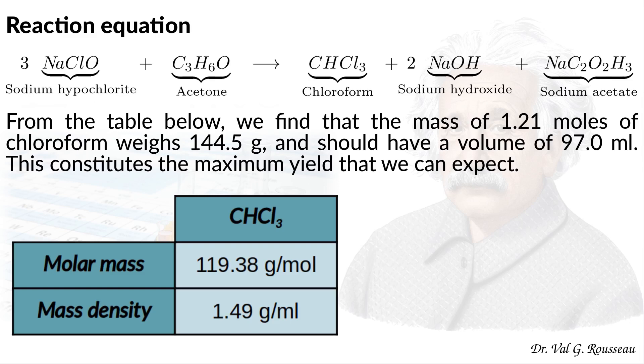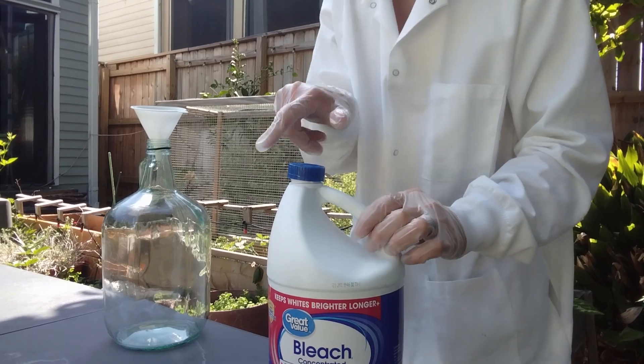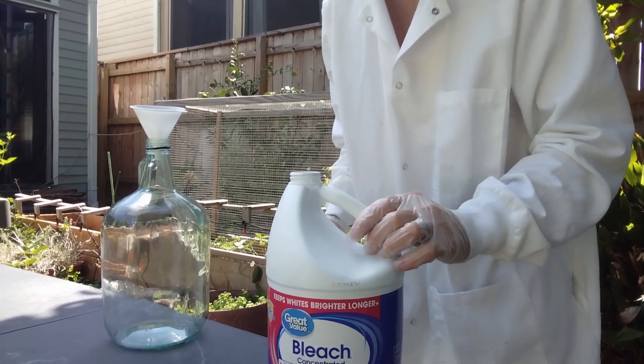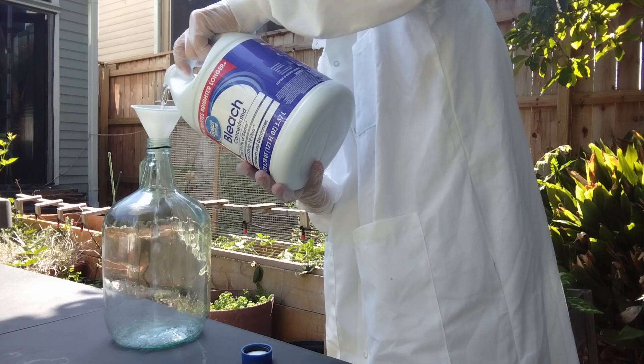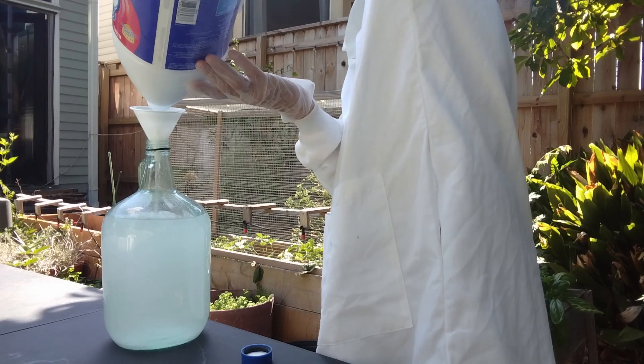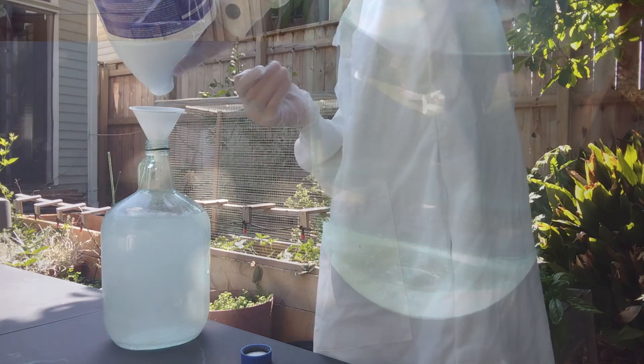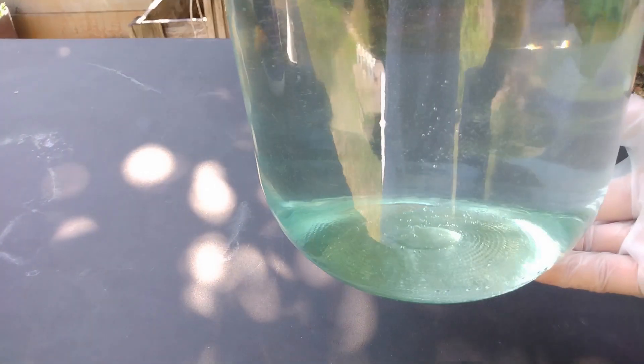We will actually obtain less because for convenience, we added all the acetone at once, which is generating a lot of heat that is destructive for the sodium hypochlorite. It has been two hours since I put the acetone, so let me transfer the mixture into a transparent container. Chloroform is denser than water and immiscible, so it forms a layer at the bottom. This is this blob that we can see.